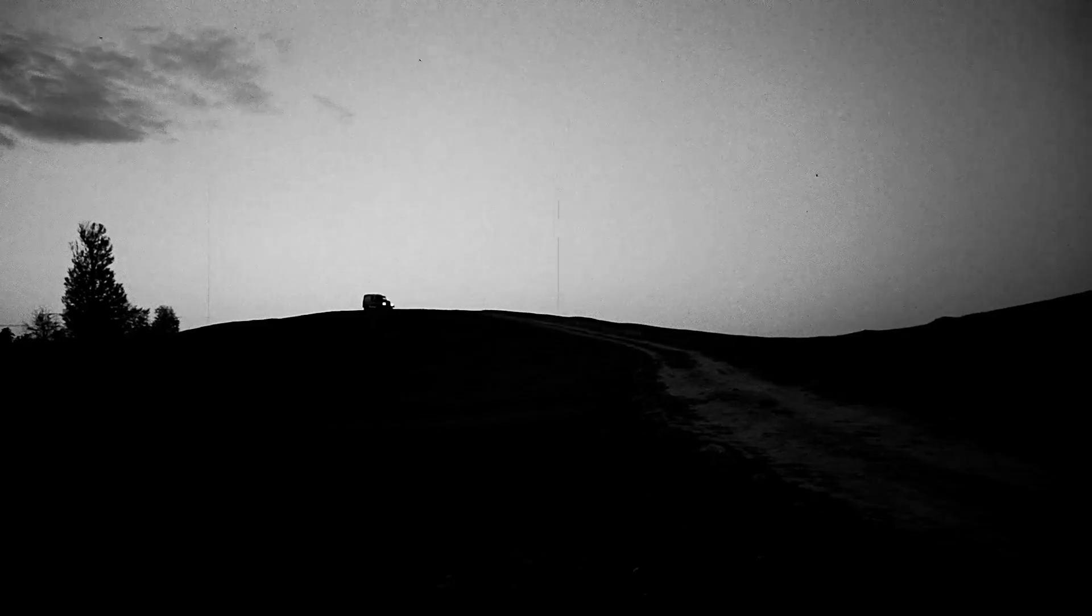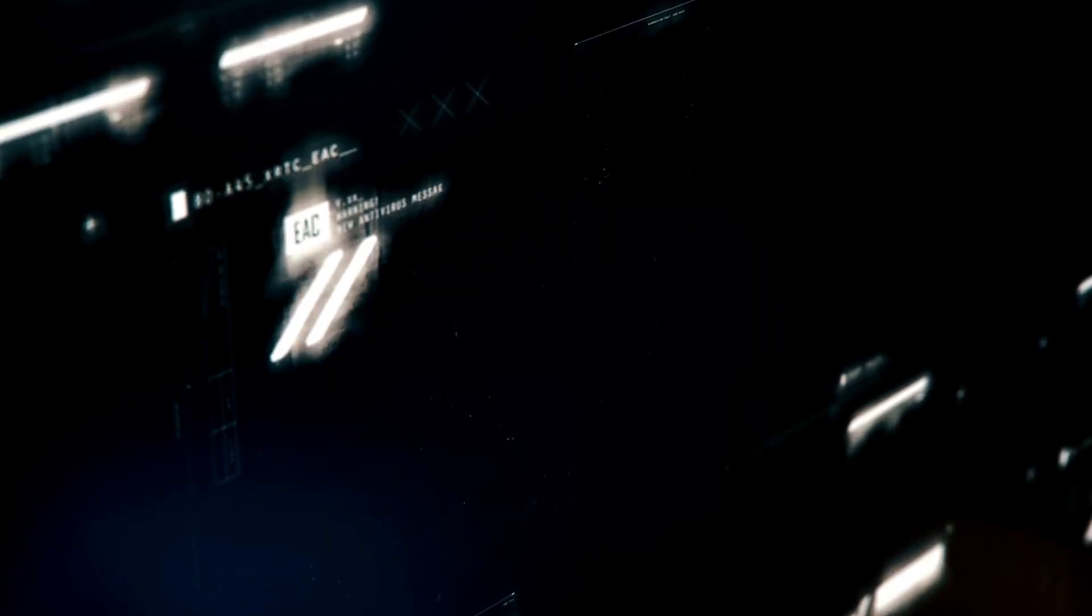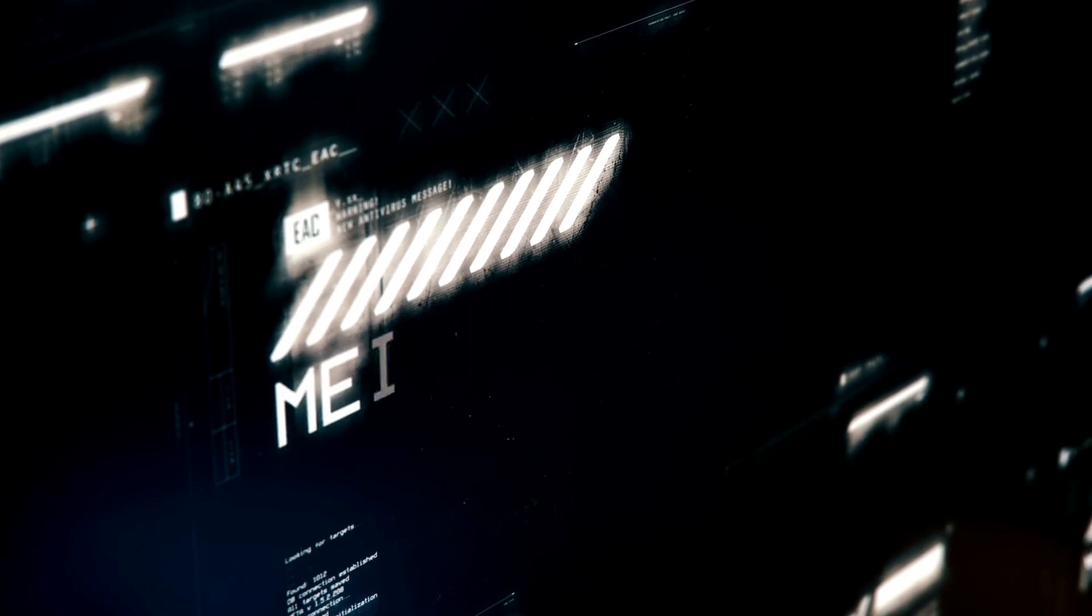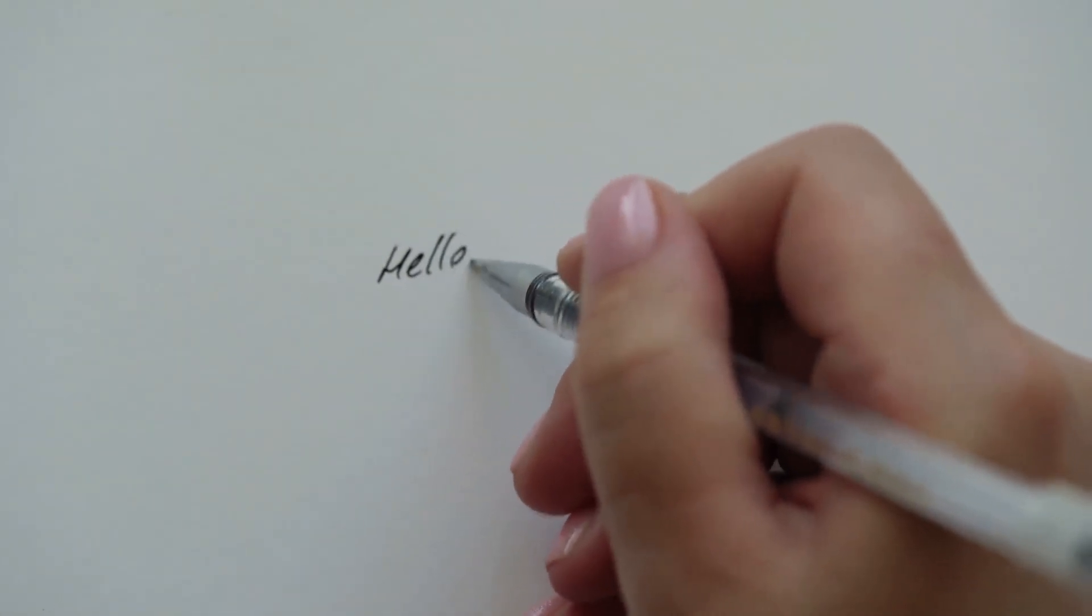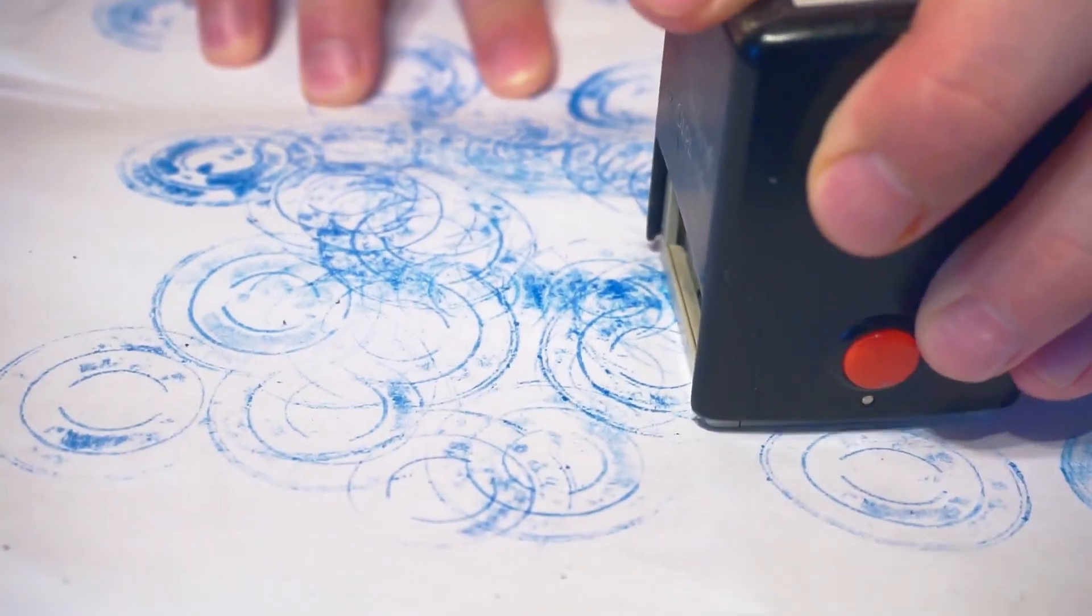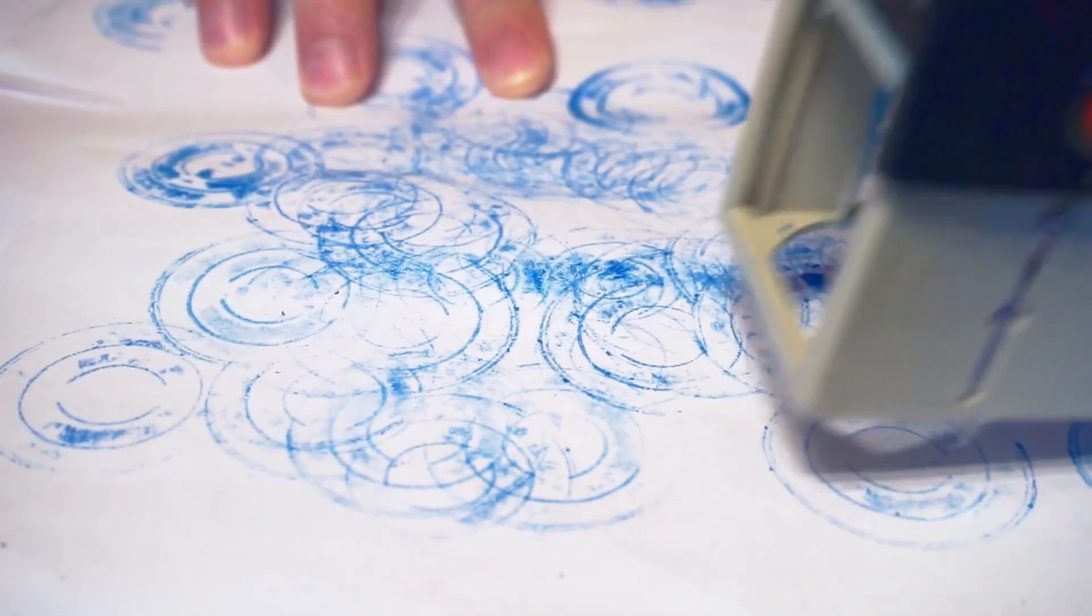For generations, humanity looked to the stars believing we were the explorers. We built instruments to peer deeper into space, searching for signs of other life. But now, with Neo-Oumuamua suspended silently above us—not communicating, not moving, not attacking—we are forced to reckon with a sobering truth. We were never the observers. We've always been the observed. The James Webb Space Telescope didn't just detect an object. It captured a presence. A moment of stillness in the cosmos when it felt like the universe itself turned to face us. And in that moment there were no answers. No contact. Only a message written in silence.